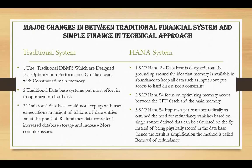Traditional databases could not keep pace with user expectations with billions of data entries - at that point data redundancy increased data storage and caused more complex issues. SAP HANA S/4 improves performance radically; the need for redundancy vanishes. Based on a single source of data, derived data can be calculated on the fly instead of being physically stored in the database. This method is called removal of redundancy - data is updated in the cloud, requiring less storage compared to traditional systems, and the system runs faster.